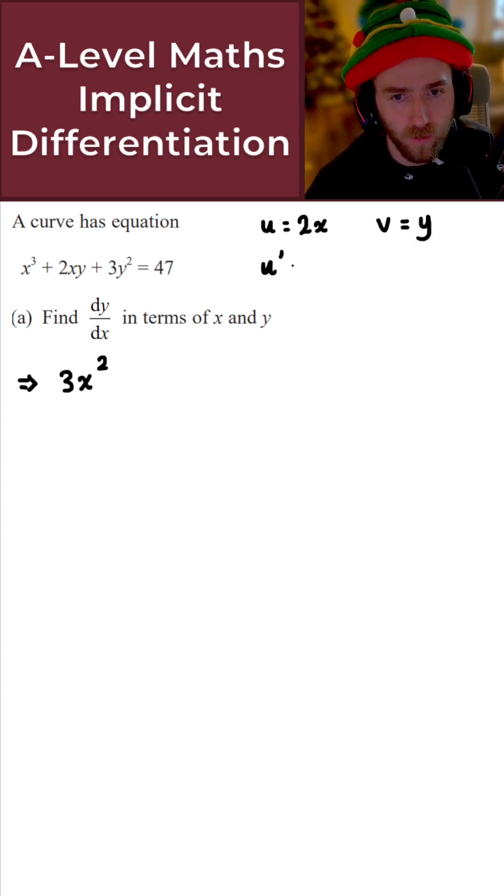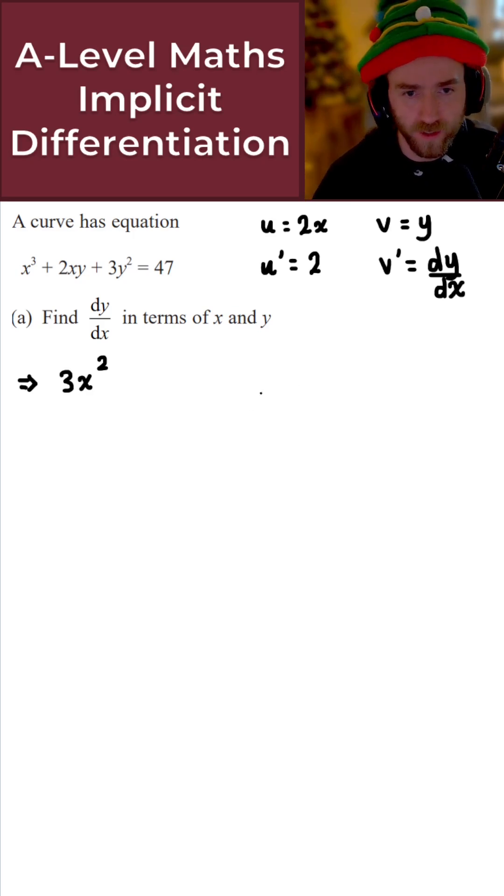then u prime, the derivative of u with respect to x, is simply 2. And if I now differentiate v with respect to x, what I get is dy by dx.